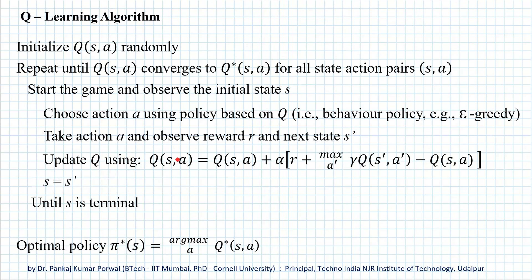We update our Q-value for state S and action A using this update equation, assign the resulting state S' to S, and continue the game until we reach the terminal state. Once we reach the terminal state we start a new game and repeat the same process until our Q-values converge to optimal Q-values. Once convergence happens, we can find the optimal policy — that is, the best action for a given state S — using argmax with respect to A of the optimal Q-value.